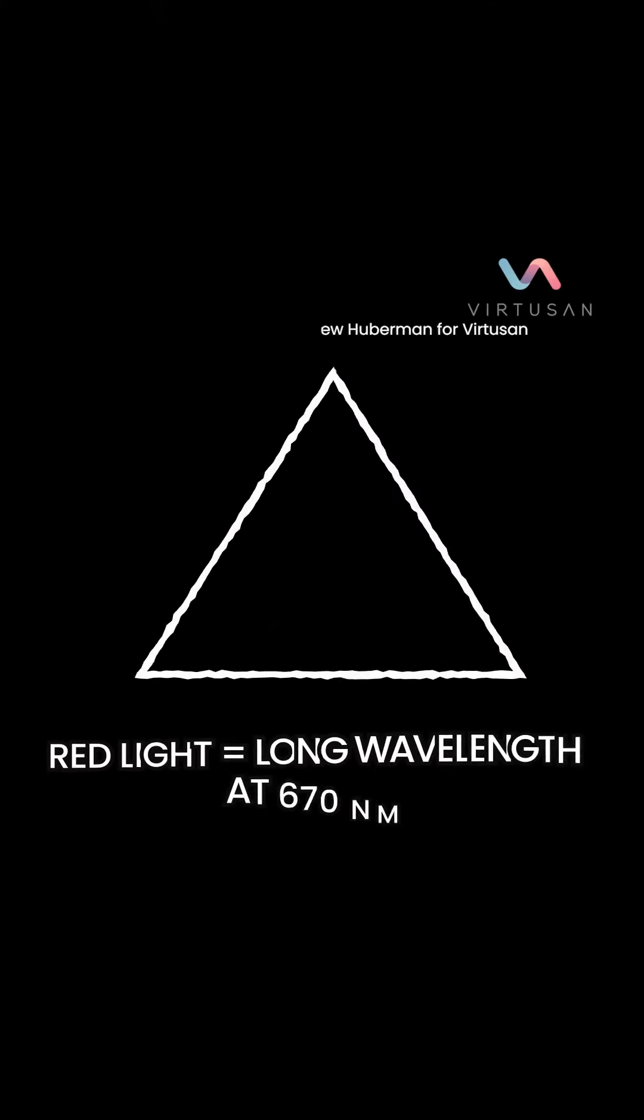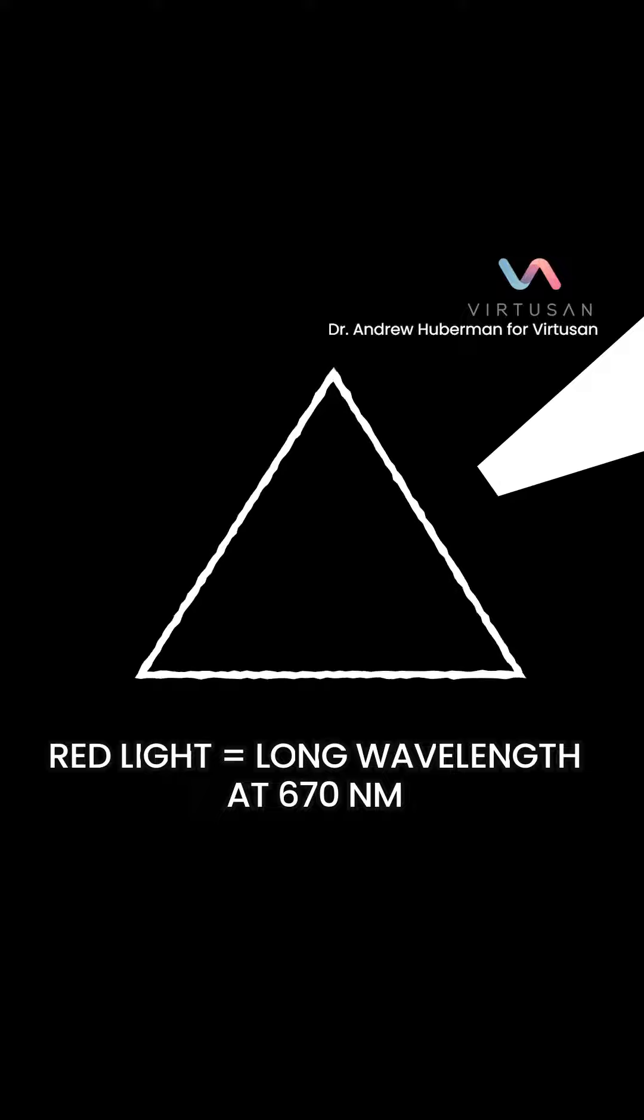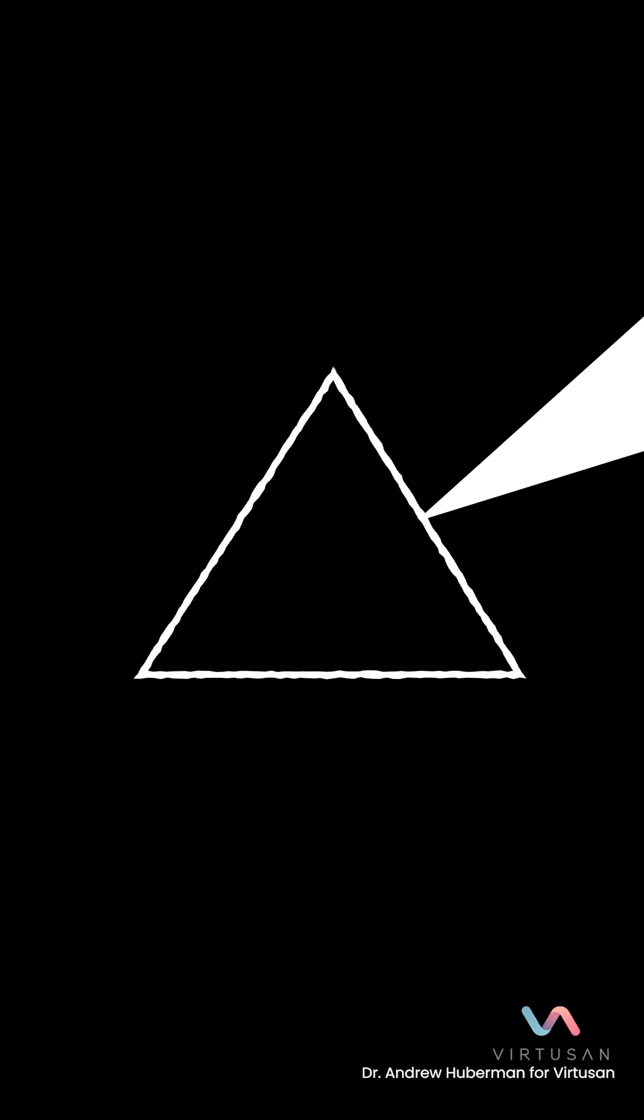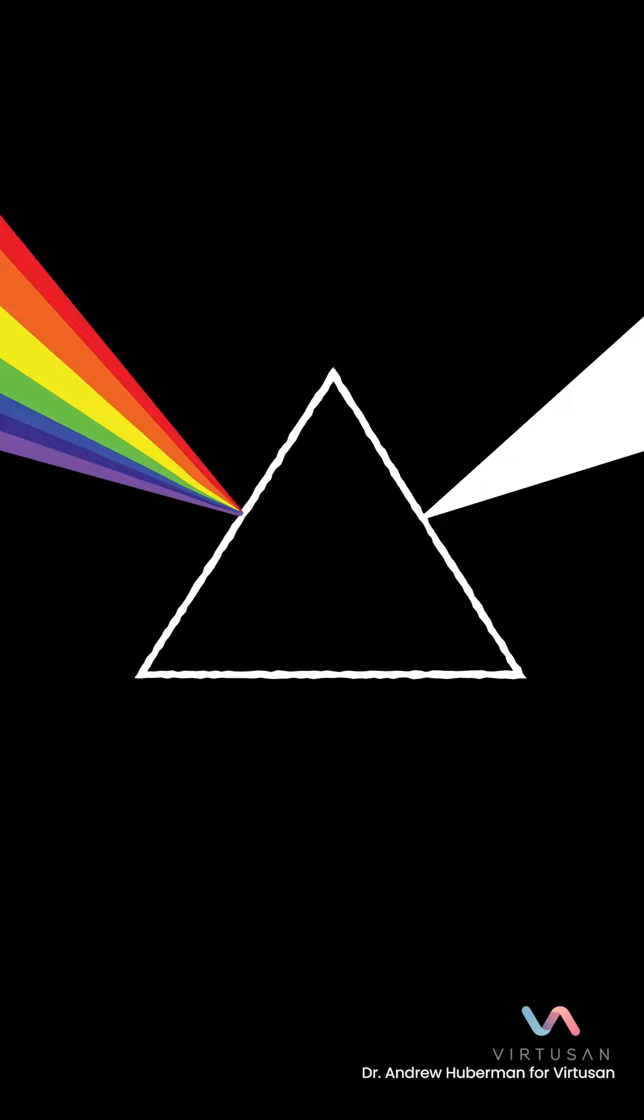Very briefly, what is red light? Red light is long wavelength light. We measure light in nanometers, and long wavelength light, like 670 nanometer light, shows up to us as red, whereas shorter wavelength light, like 400 or 500 nanometers, would show up as ultraviolet blue or green. So different wavelengths of light show up to us as different colors.